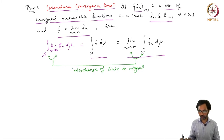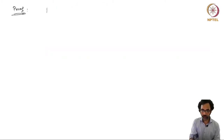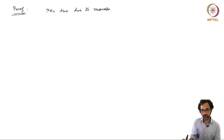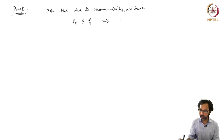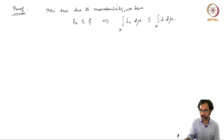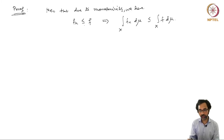Let us look at the proof of the Monotone Convergence Theorem. First, note that due to monotonicity, since fn is less than or equal to f, this implies that the integral of fn d-mu is less than or equal to the integral of f d-mu. If fn is a non-decreasing sequence converging to f, then the limit bounds all the fn's, and by the monotonicity property the integrals also satisfy this inequality.